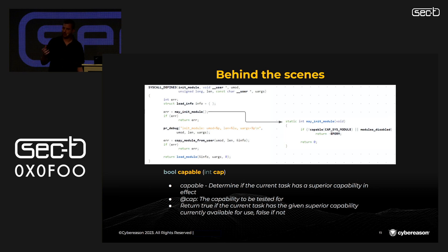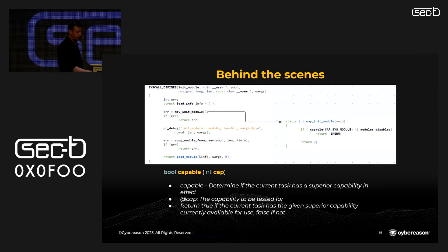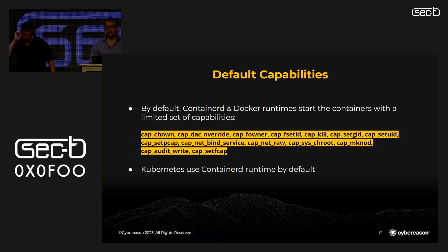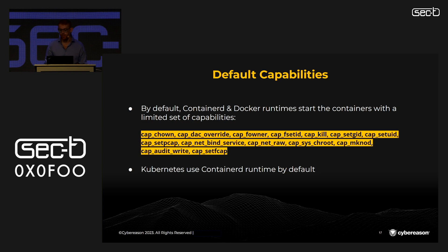One of the security checks a function performs is whether the permissions of the task allow execution by running the kernel function 'capable'. The capable function receives the name of the capability as an argument and returns true if the current task has that capability available, and false if not. For example, the init_module system call, responsible for installing kernel modules, calls the capable function to check whether the CAP_SYS_MODULE capability is available. By default, containerd and Docker runtime start their containers with a limited set of capabilities.